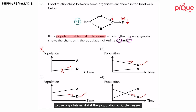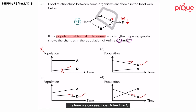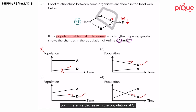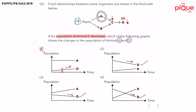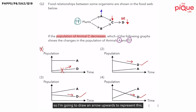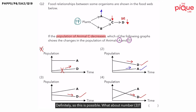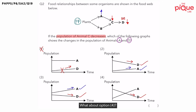Now let's take a look at what happens to the population of A if the population of C decreases. What is their relationship? Does A feed on C, or does A get eaten by C? A gets eaten by C. So if there is a decrease in the population of C, A is going to be happy — if there is less C feeding on A, the population of A would increase. Options two, three, and four all show an increase in the population of A, so all three are still possible.